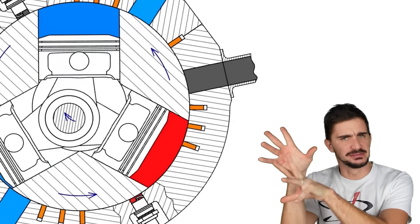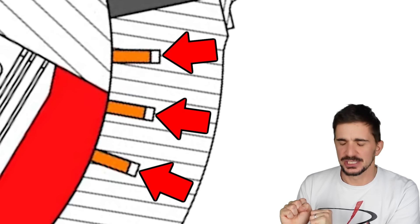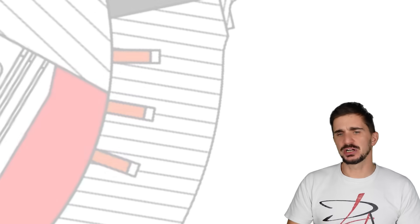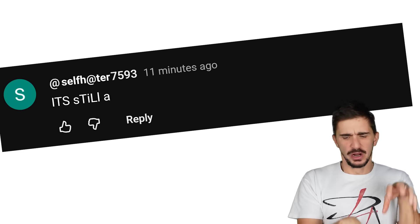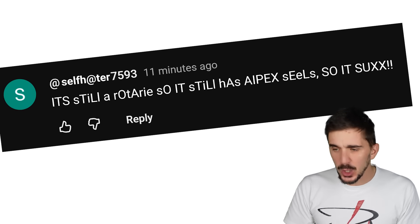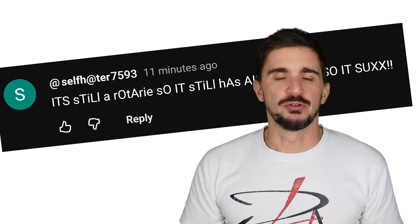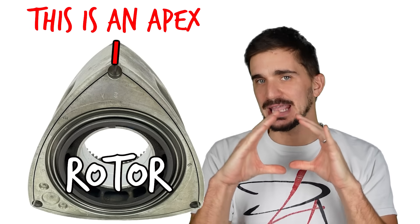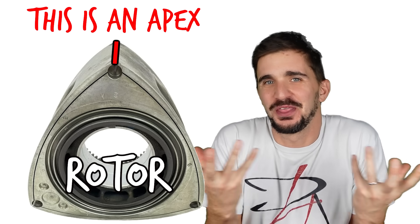You probably already noticed these little orange things, right? Yes, they're the seals. I'm pretty sure some of the more zealous keyboard warriors have already commented something like, it's still a rotary, so it still has apex seals, so it sucks. And they probably did so long before getting to this point in the video. Yes, it's still a rotary. No, it doesn't have apex seals. You know why? Because there's no apex. The rotor isn't triangular like in a Wankel, so there's no apex. In fact,